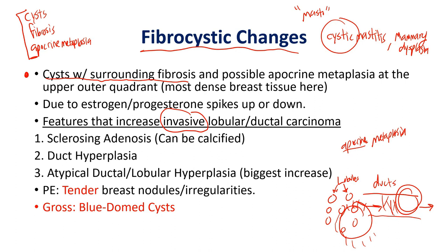The additional features that can increase risk for invasive lobular or ductal carcinoma are: sclerosing adenosis, duct hyperplasia, and atypical ductal or lobular hyperplasia. Sclerosing adenosis and duct hyperplasia both cause about a two times increased risk of invasive breast carcinoma. Atypical ductal or lobular hyperplasia is the most severe, carrying about a five times increased risk.